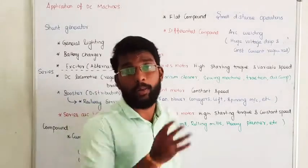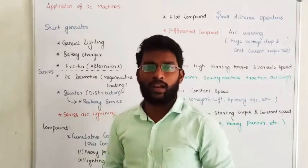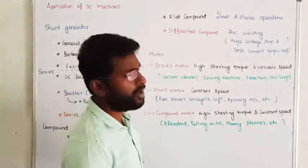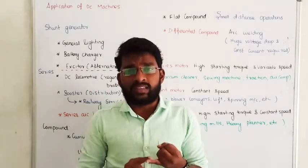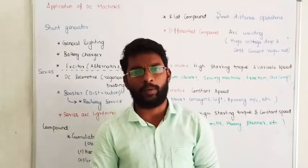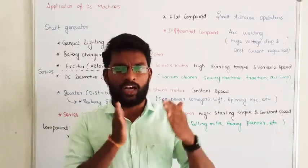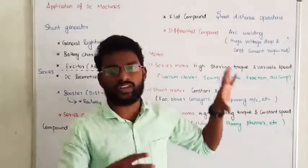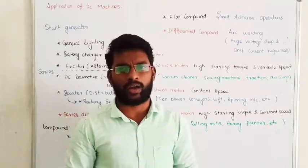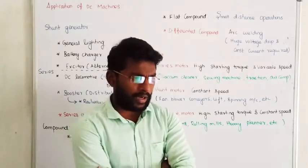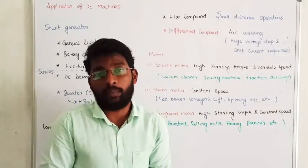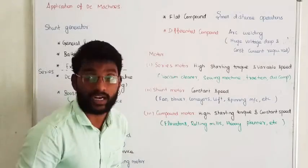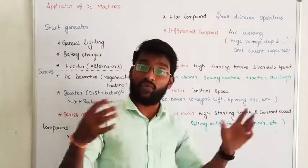The next one is called Differential Compound — very, very important. The Differential Compound generator provides a constant voltage with a small short-circuit current comparatively. It maintains voltage drop with constant current, and in the case of arc welding, we go with the Differential Compound generators. That is all about some of the major applications of the DC generator.